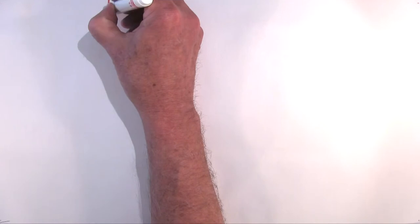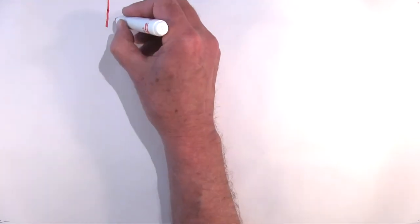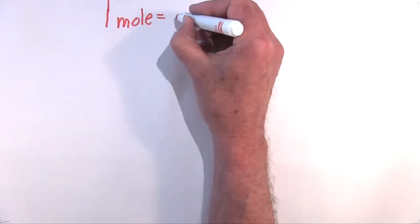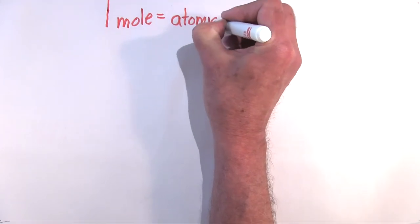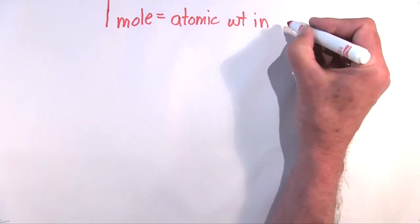So if we take a look here, sulfur has 32 grams, so there would be 32 grams of sulfur that would be what we call one mole. Iron would be 56 grams, so there would be 56 grams in one mole. Aluminum would be 27 grams in one mole. Now these bottles all have different numbers of grams in them—32, 56, 27—but they all have the same number of atoms in there because they're relatively based. So one mole is equal to the atomic weight in grams.